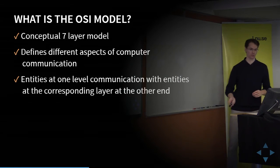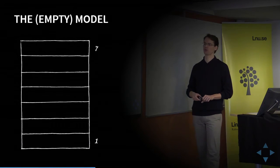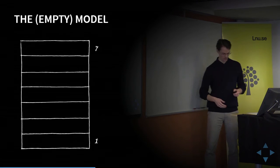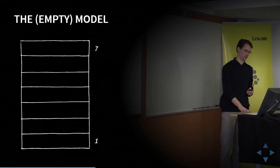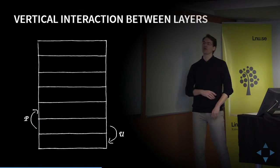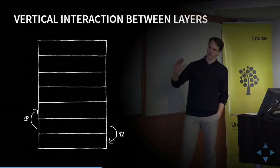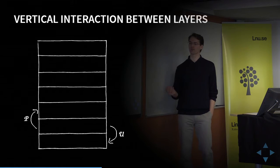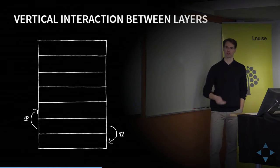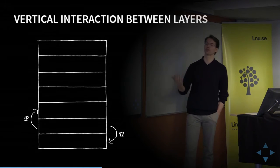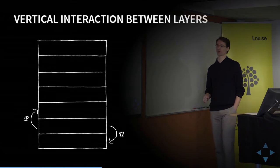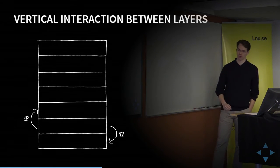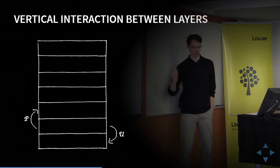That means if one computer is communicating with another, the different layers communicate only with entities in the same layer at the opposite end. This is what the model looks like — it's numbered from the bottom up, so the lowest level is layer one, and the top layer is layer seven. If we look at one system with layer two as the focus: layer two provides functions for layer three, so each layer provides functions for the layer above it — every layer except the seventh, which provides functions for the application. And each layer uses functions from the layer below it — the second layer uses functions provided by the first layer.